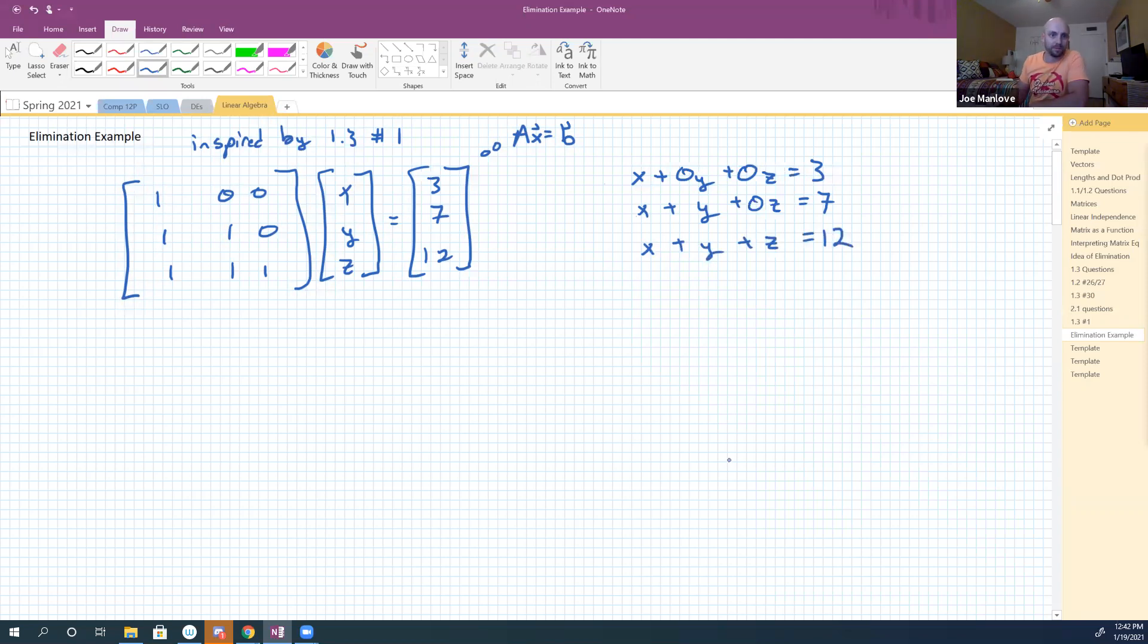You guys with me on that? Okay, so I'm hoping that you realize that this is a little bit of a dumb example. Comments on why this is a dumb example? Obviously x is three, y is three, and z is five. Okay, so we can solve this essentially by inspection, right? You guys all see that.